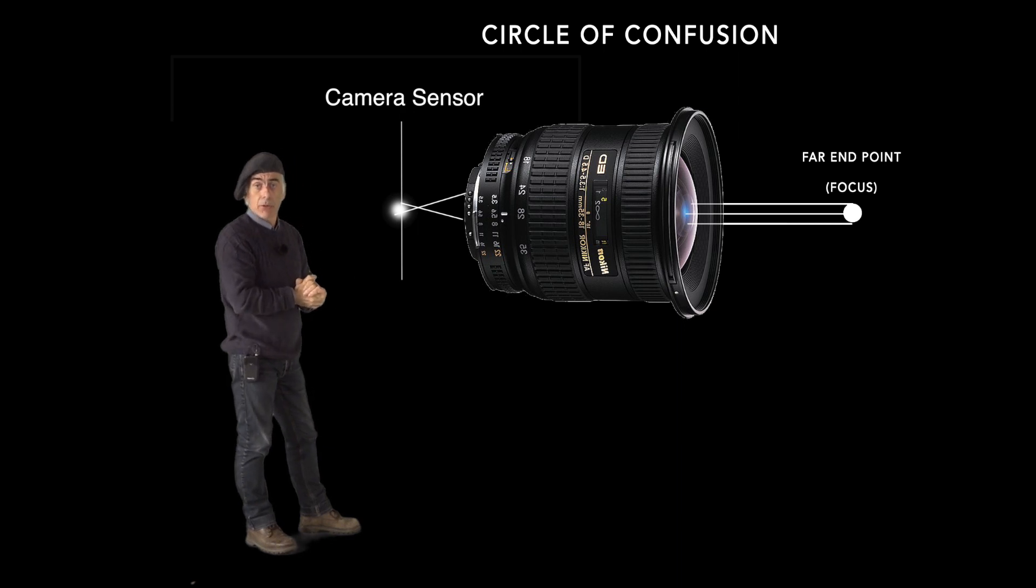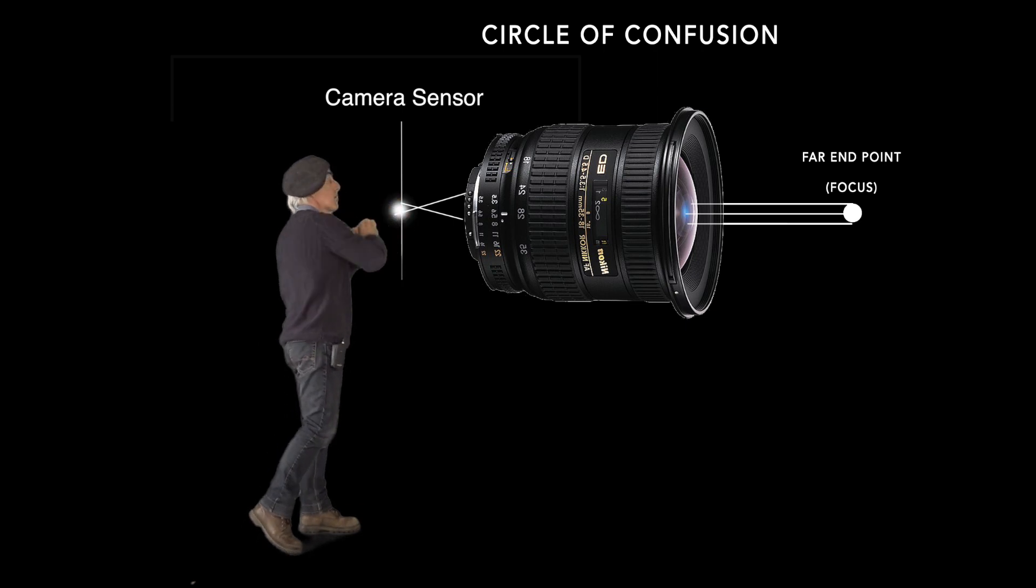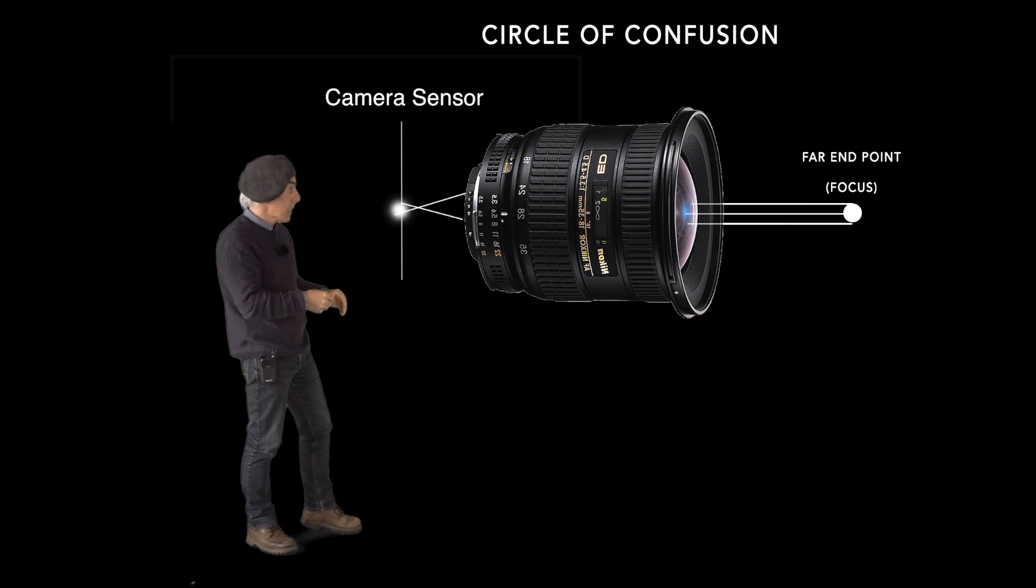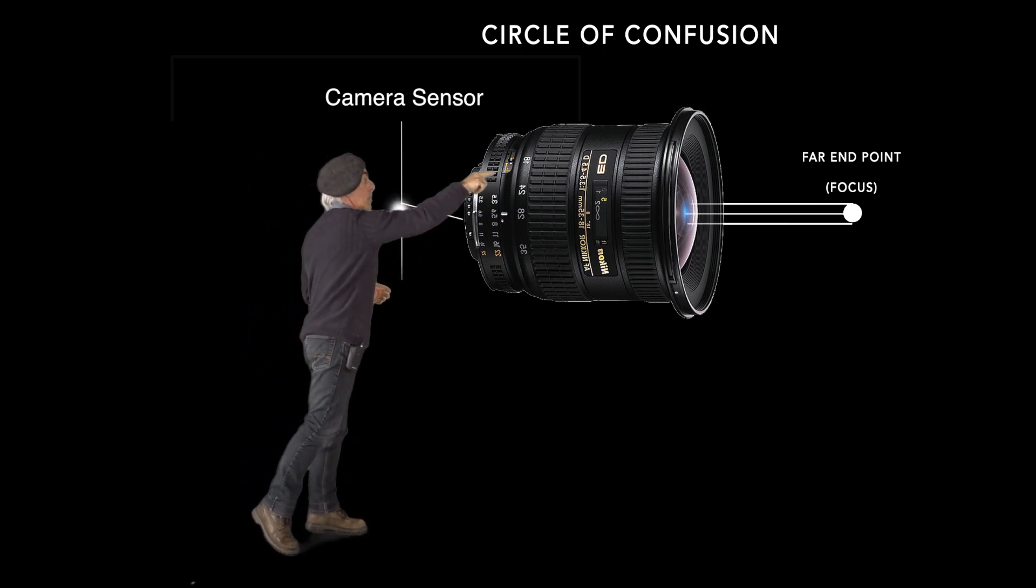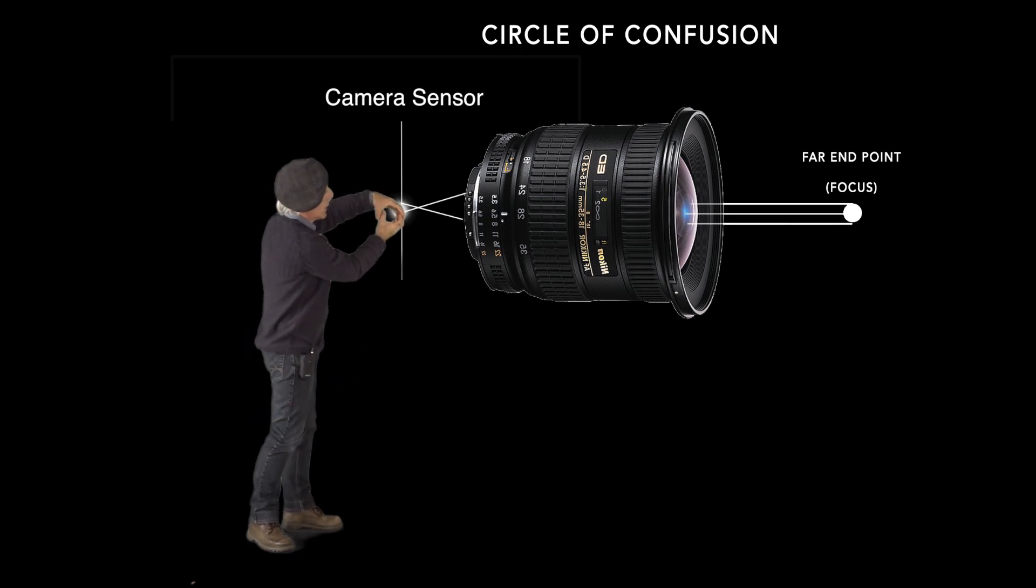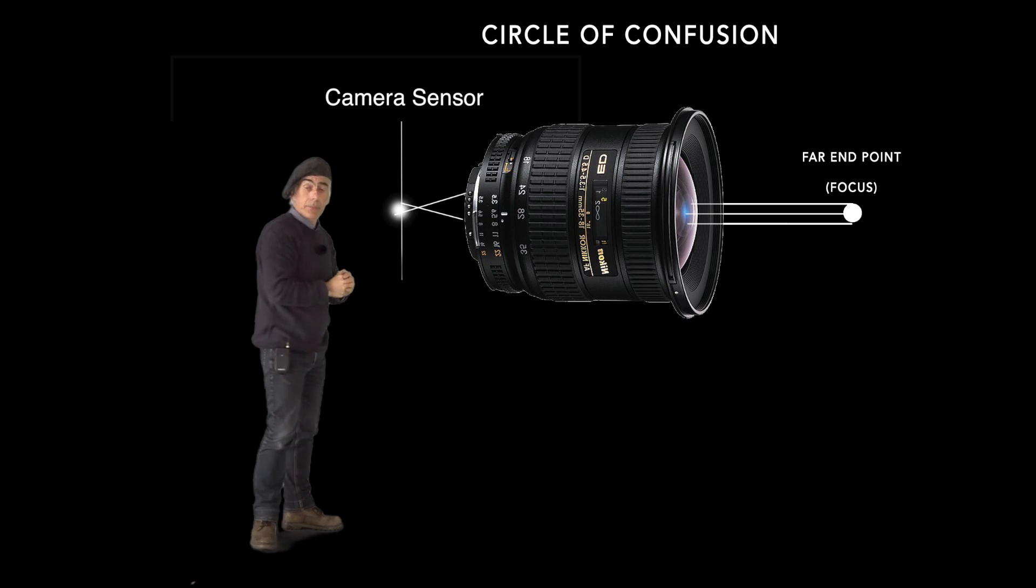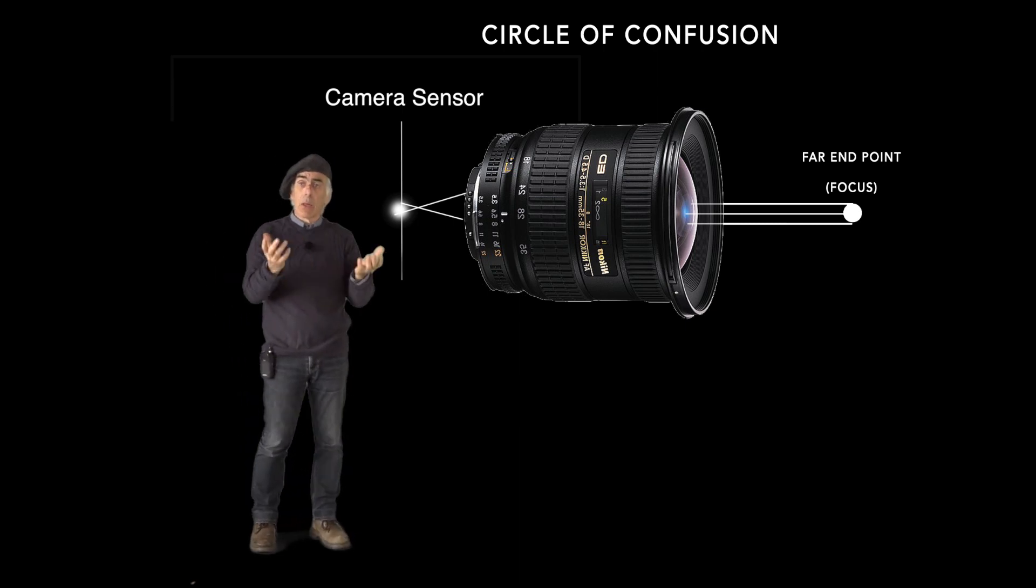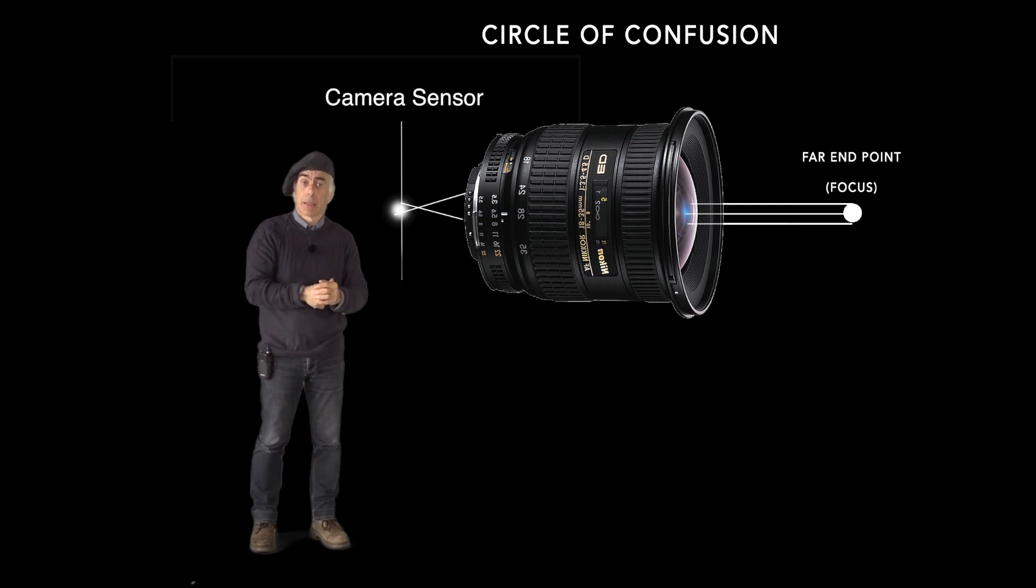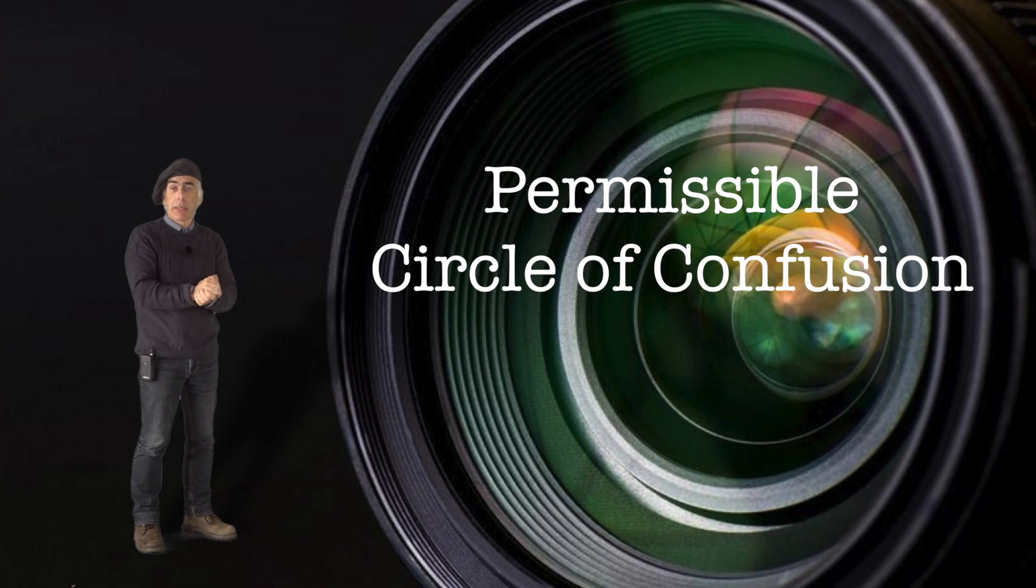However, not all of them will be centered in that central focus point on your sensor. Some will be a bit behind the sensor and some will be a bit before the sensor. As a consequence, that little light point where we focused on the far end is now showing up as a certain dish or surface on my sensor, and that is what we call the circle of confusion of a lens. That's pretty simple and there's not much you can do about it. This is just physics.